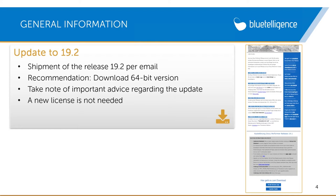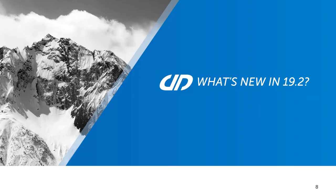The minimum version of your current DocuPerformer must be 15.1 to update to the new version 19.2. A new license is not necessary, and I highly recommend our step-by-step update instructions in our user manual. Now let's move on to the new features in version 19.2.